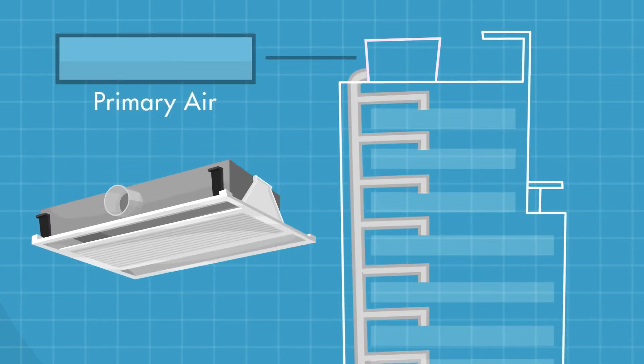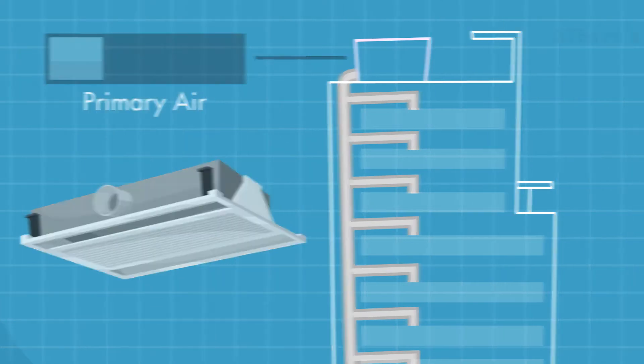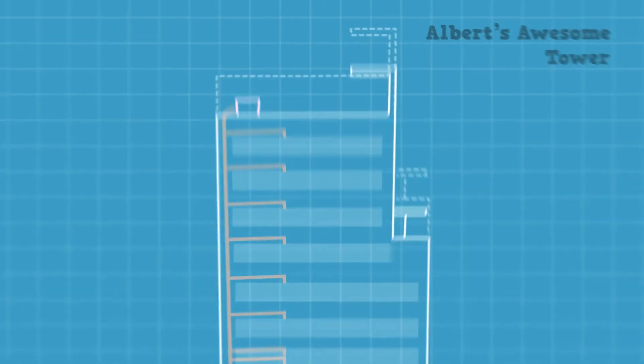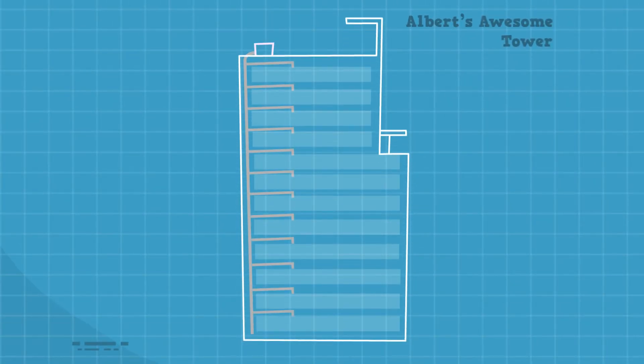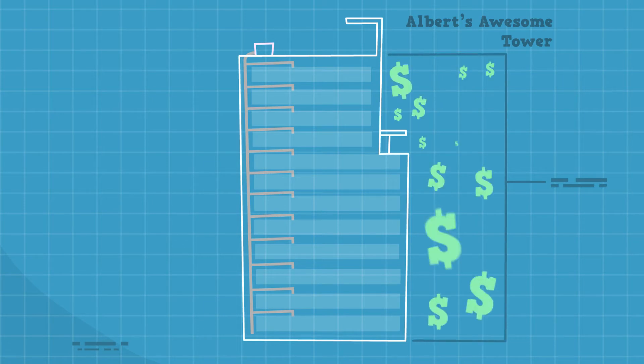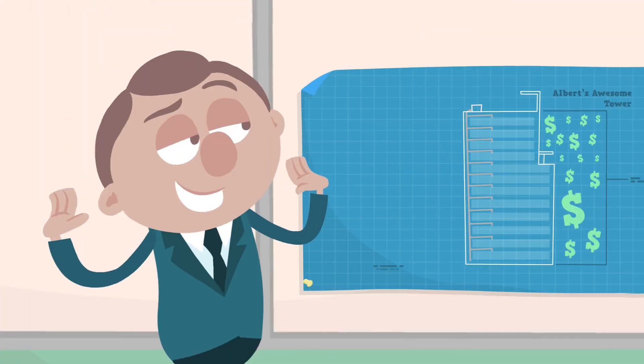Second, while active beams still require dehumidified air from the central plant, they require a lot less primary air, meaning lower fan power and smaller ductwork. This allowed Albert to fit more floors into his building spec. And more floors means more leasable office space. You go, Albert!